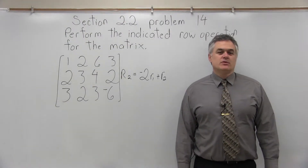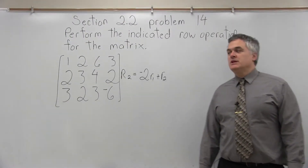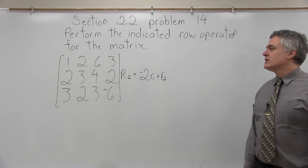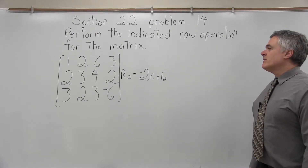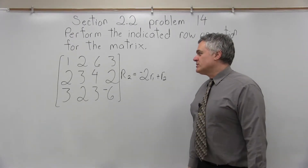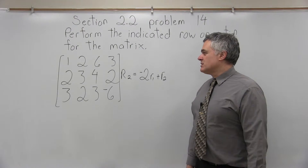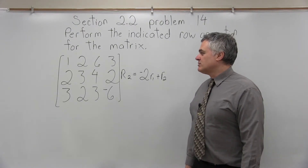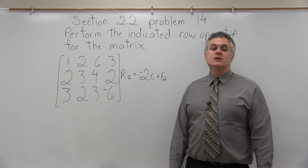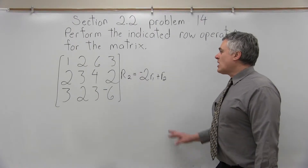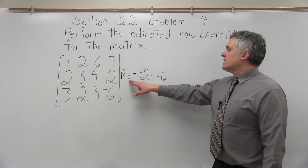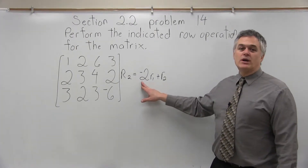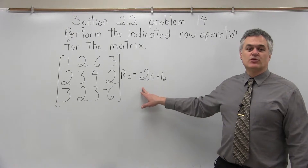This is Section 2.2, Problem 14. It says perform the indicated row operation for the matrix. We have a matrix with three rows: the top row is 1, 2, 6, 3; the middle row is 2, 3, 4, 2; and the bottom row is 3, 2, 3, negative 6. Our row operation is to make a new row 2 that is equal to negative 2 times row 1 plus the old row 2.